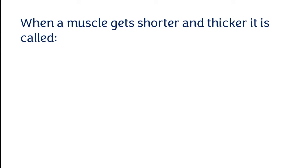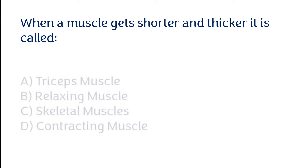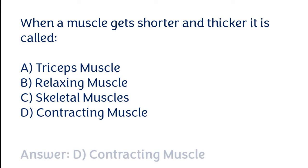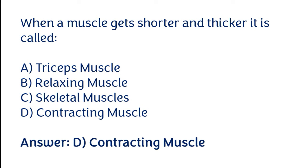When a muscle gets shorter and thicker, it is called — Options: Tricep muscle, Relaxing muscle, Skeletal muscle, or Contracting muscle. The correct answer is option D — when a muscle gets shorter and thicker it is called a contracting muscle.